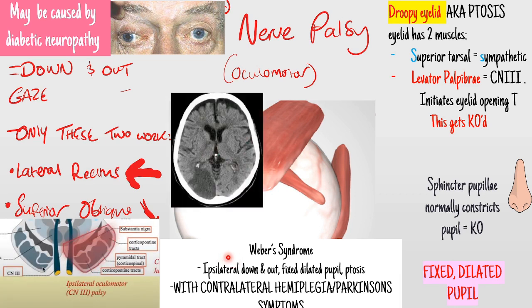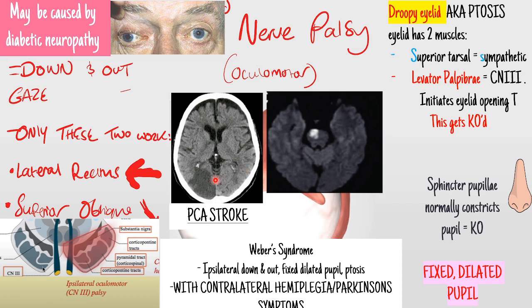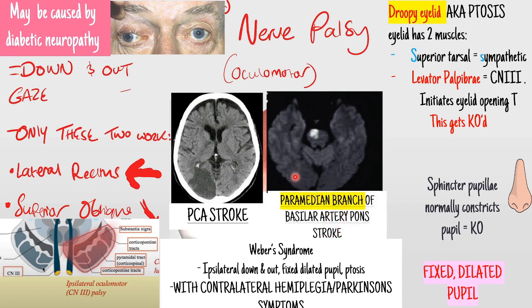There are two causes of Weber's syndrome that you need to know about, and both are types of strokes. The first is a PCA stroke - your posterior cerebral artery supplies your occipital lobe. On the scan, the first thing you look for is symmetry - you can see a big black shadow on one side that isn't on the other. That's an ischemia, meaning your PCA has been occluded, so blood flow isn't reaching that area and the tissue has died.